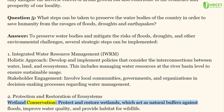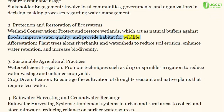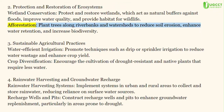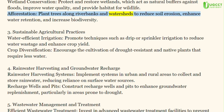Protection and Restoration of Ecosystems — Wetland Conservation: Protect and restore wetlands, which act as natural buffers against floods, improve water quality, and provide habitat for wildlife. Afforestation: Plant trees along riverbanks and watersheds to reduce soil erosion, enhance water retention, and increase biodiversity.